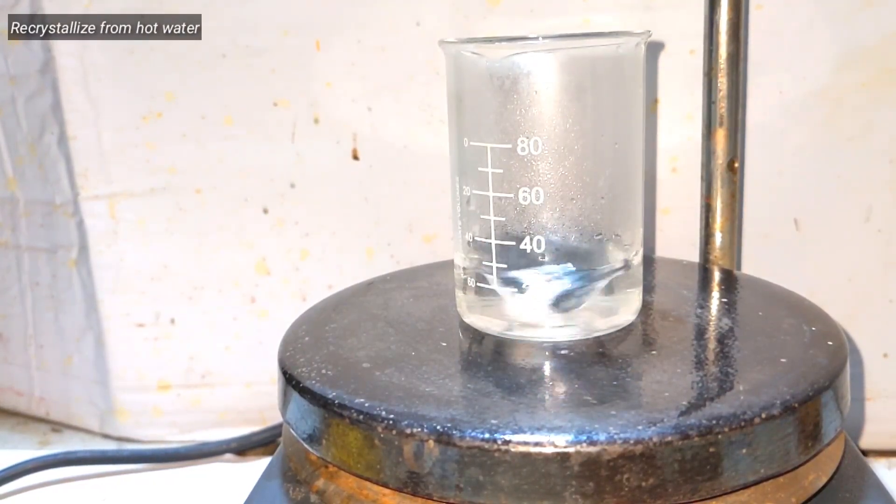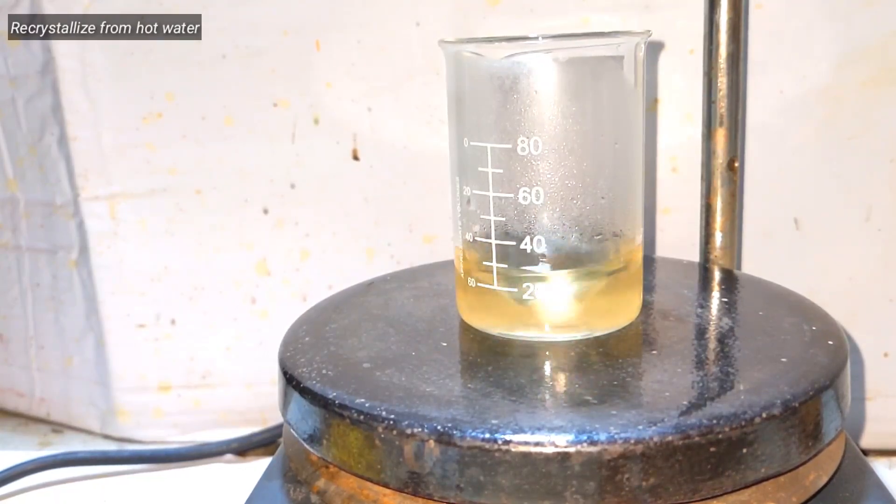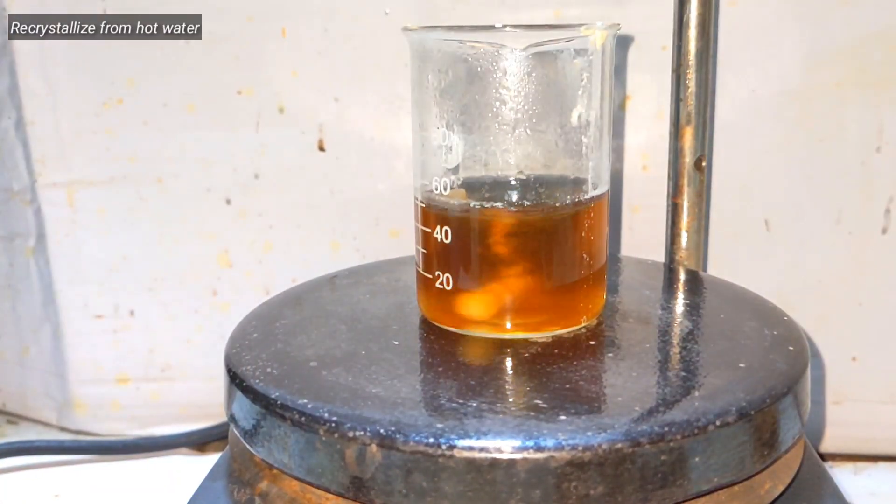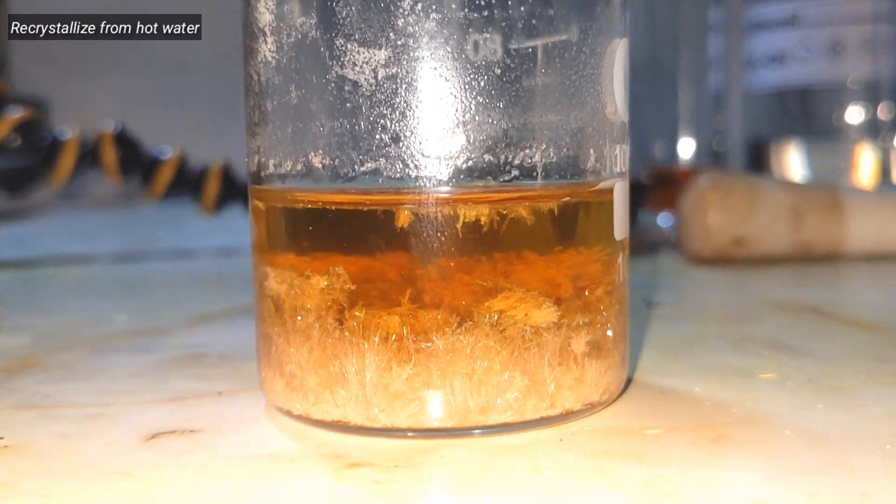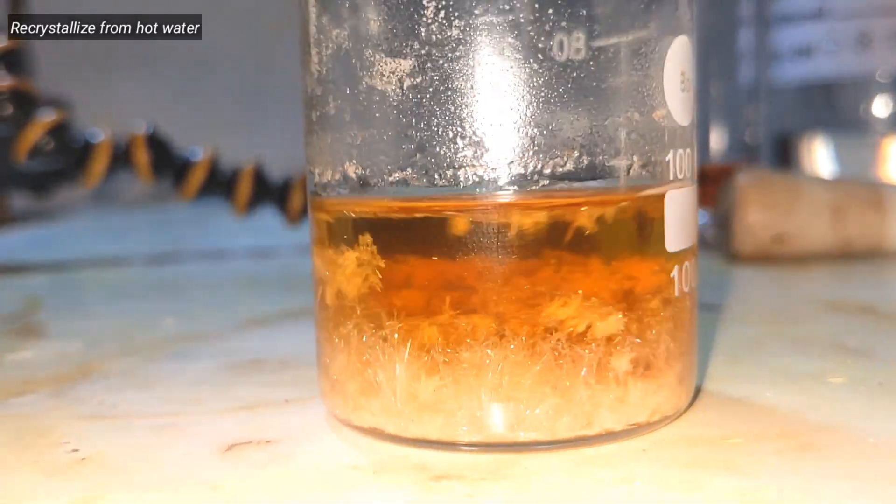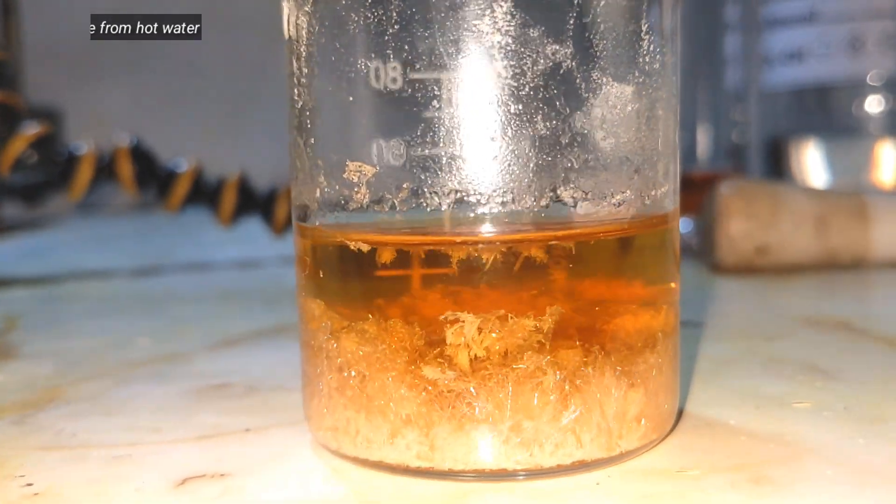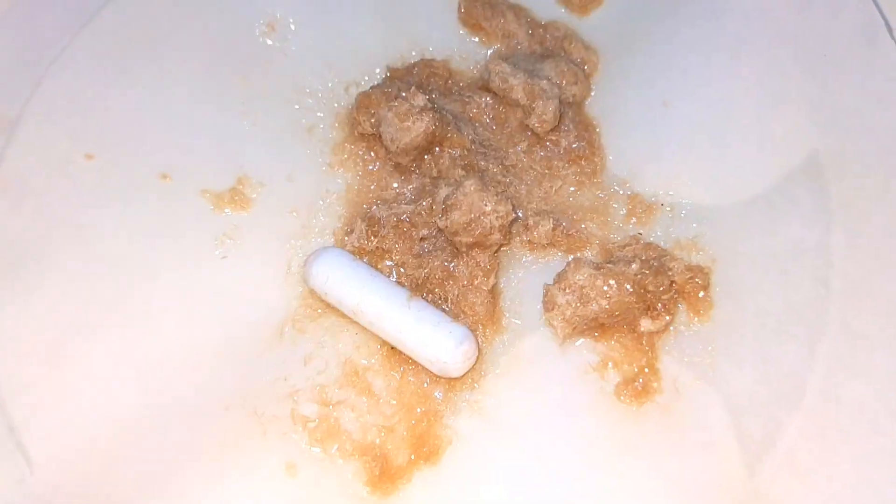It was then dissolved in a very minimum amount of hot water and was recrystallized. On cooling, needle-shaped crystals of 2,4-dihydroxybenzoic acid separate out. It was then taken out of the beaker and was dried.